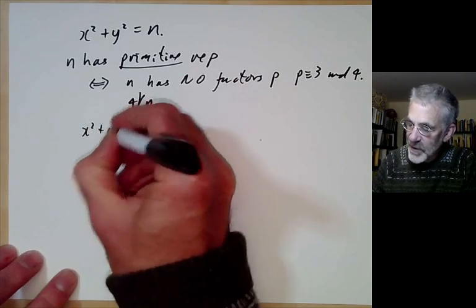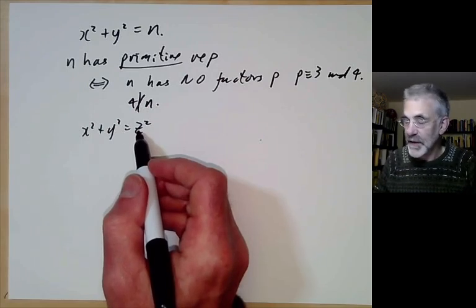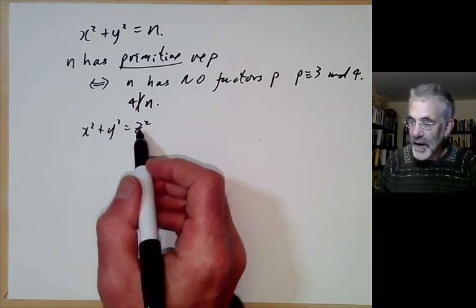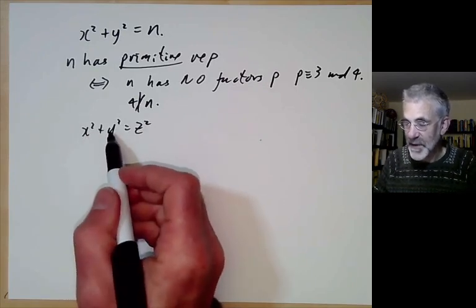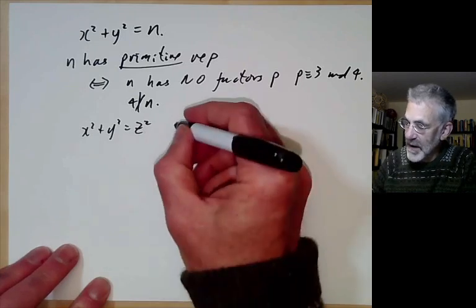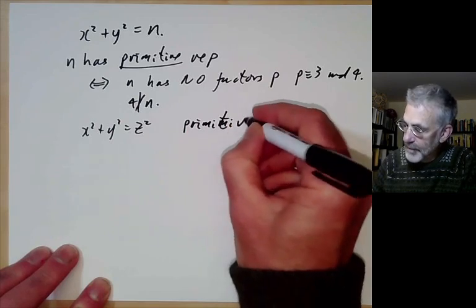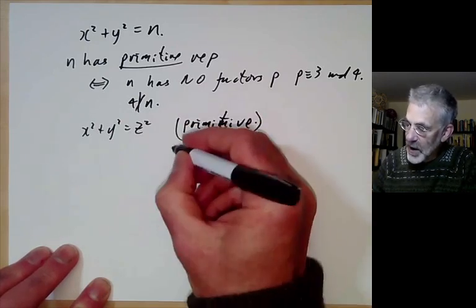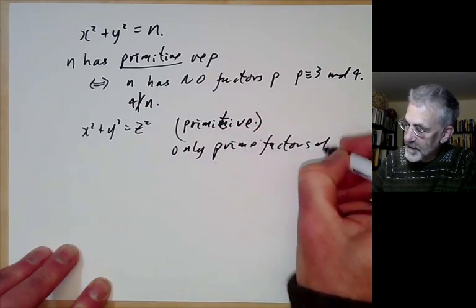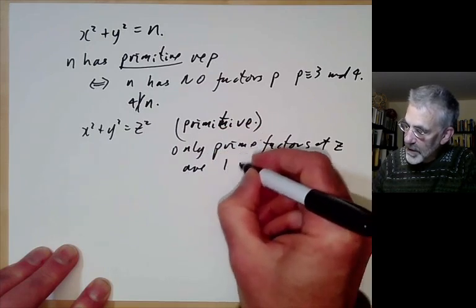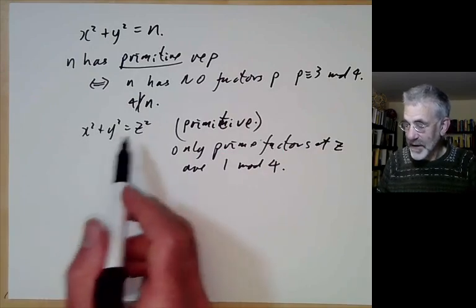Let's apply this to x squared plus y squared equals z squared. We notice that if z is divisible by 2, then z squared is divisible by 4, and if x squared plus y squared is divisible by 4, it's easy to check that both x and y must be even — so this would not be primitive. If we have a primitive solution, then the only prime factors of z are 1 mod 4, and conversely, if all prime factors are 1 mod 4, then there's a primitive solution.